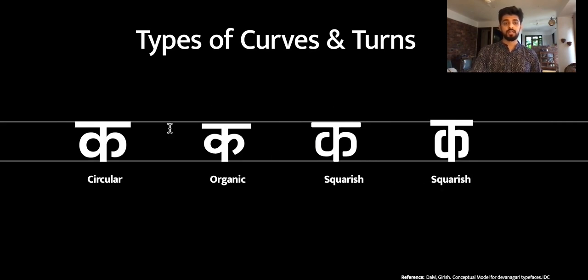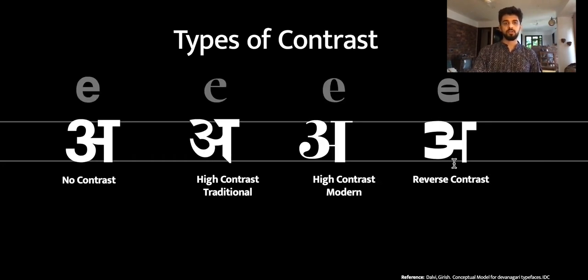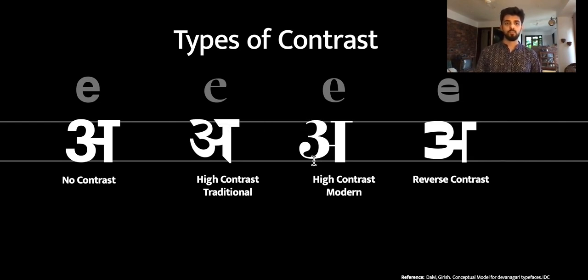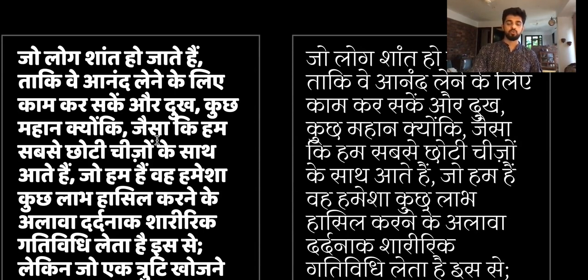In terms of types of curves, there is a circular curve observed in geometric typefaces, an organic curve which is more humanist, then squarish which is more geometric, and very squarish. There are also different types of contrast in Devanagari fonts: no contrast, observed in monolinear fonts which are the counterpart to Latin sans-serif fonts; high contrast but traditional, observed with a left-ward canted scribing tool; and high contrast but modern, the result of a pen held in the way one would use to scribe Bodoni. There is also the gray value of the font which determines its use case — whether it will be used for titles or for text.